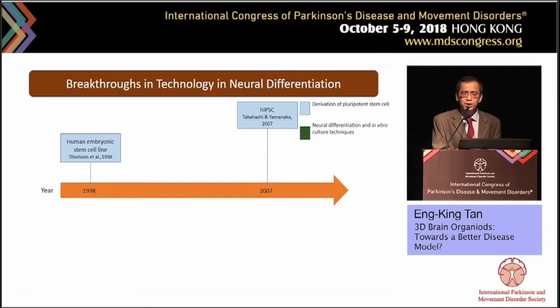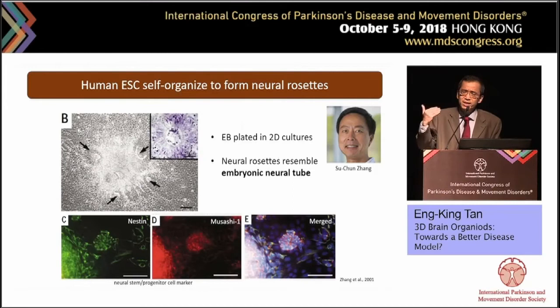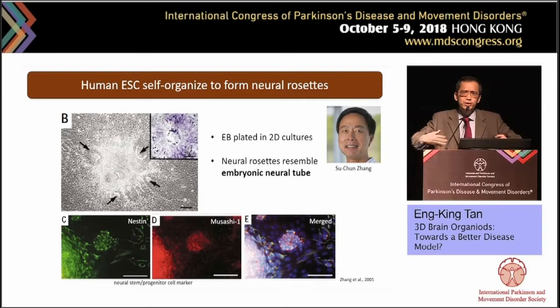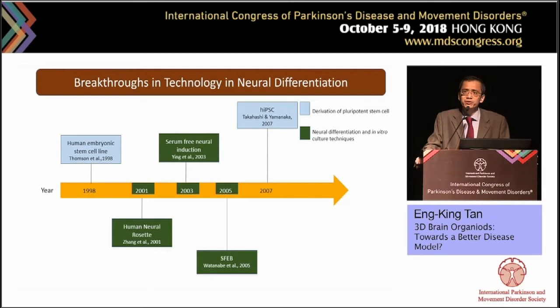The second major group of progress is breakthroughs in technology for neural differentiation. First, regarding human neural rosette formation: Zhang Su Chen, working with James Thomson, was first to identify that human embryonic stem cells could self-organize to form a neural rosette when plated as embryoid bodies in 2D culture. In the picture you can see elongated cells congregating at the center, forming a rosette — a ring-like structure like children holding hands in a merry-go-round. This was a major breakthrough because these neural rosettes actually resemble the embryonic neural tube, setting the critical stage for brain region development.